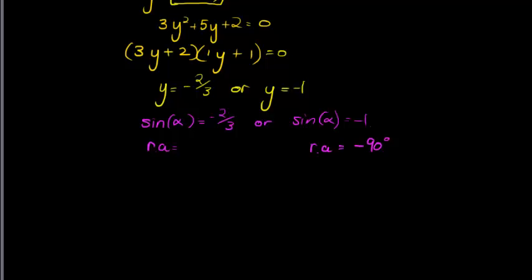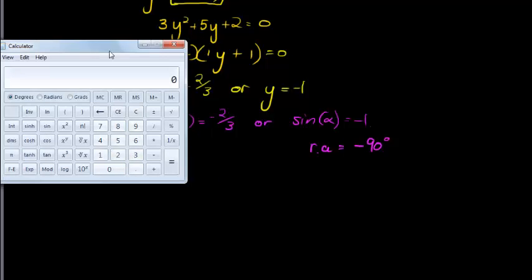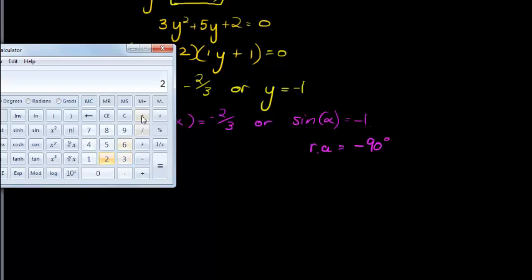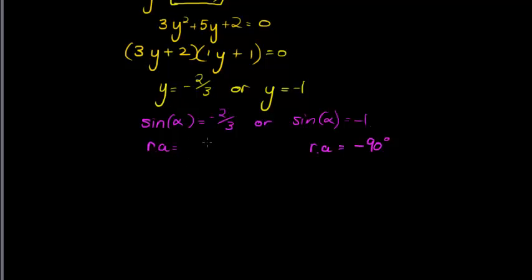So I'm going to use my calculator for the second one so that I have negative 2 over 3, 2 over 3, negative. And I use the inverse sine function to get negative 41.81. So here it's negative 41.81, which means my solutions are that alpha is equal to negative 41.81 plus 360 times k.